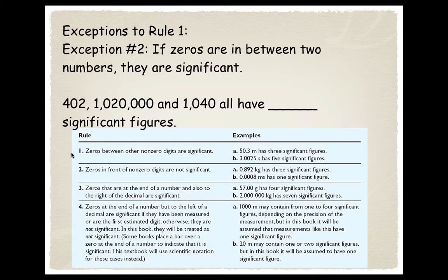Exception number two to rule number one: If the zeros are sandwiched in between the numbers, then they are significant. So 402, 1,040 - they all have three significant figures: 1, 2, 3.